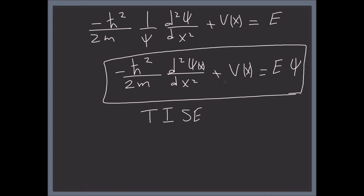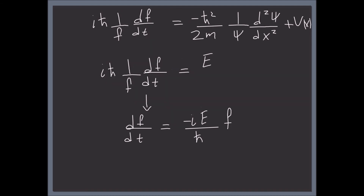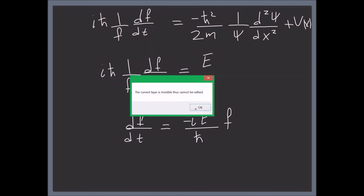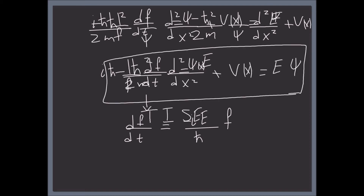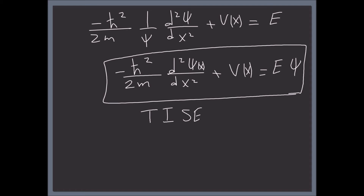This is the equation we'll be looking at for different values of V. At this point we can't solve it because we don't know what V is — until I give you V, you can't solve this equation. But the good news is we can solve the other equation, the time equation: dF/dt = −(iE/ħ)·F.